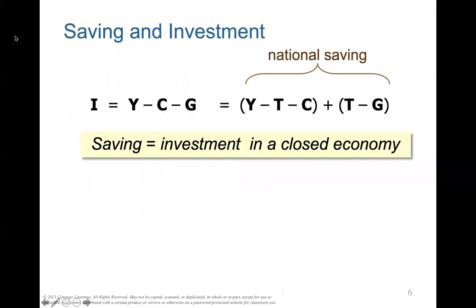These are the equations we need to remember: I equals our investments, equals Y minus C minus G. Or viewed as two pieces: personal savings plus public savings equals national savings. Y minus T minus C is your personal savings, and T minus G is equal to public savings. So savings equals investment in a closed economy.